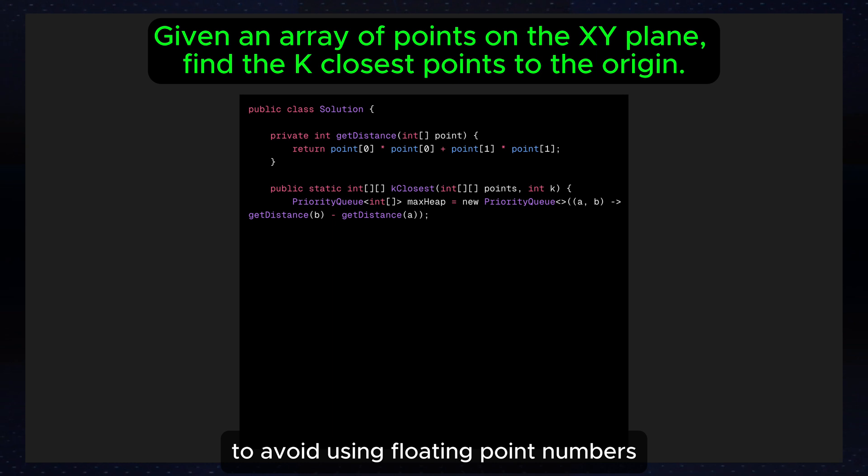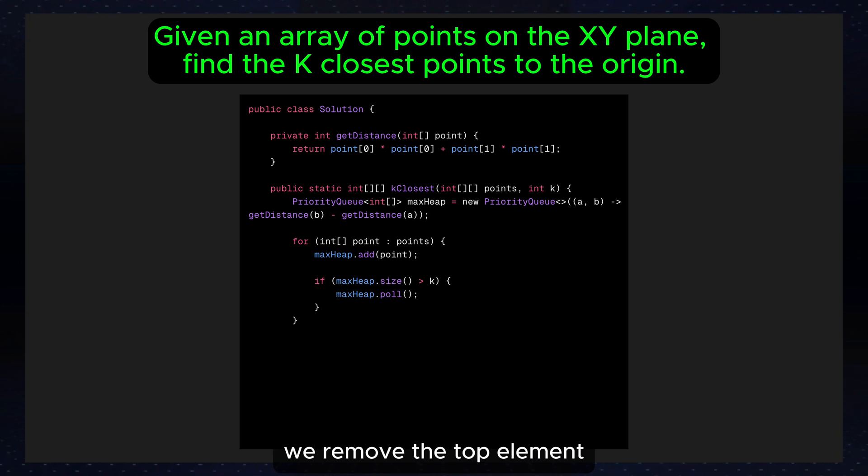To avoid using floating point numbers, we are using the square distance. Next, we iterate over all the points. We push each point to the max heap. If the heap size exceeds k, we remove the top element, which is the point with the largest distance.